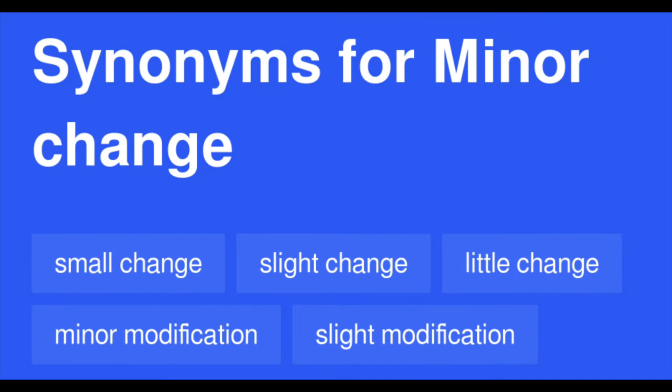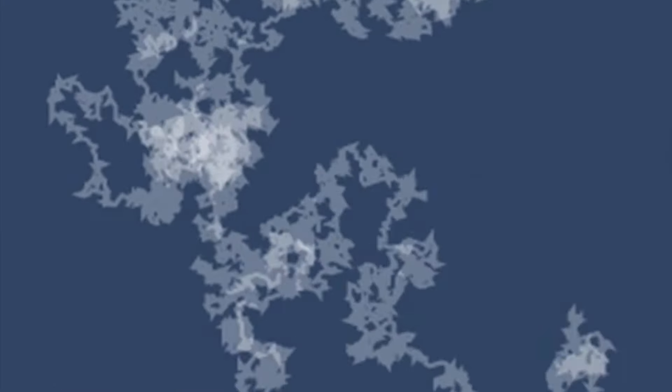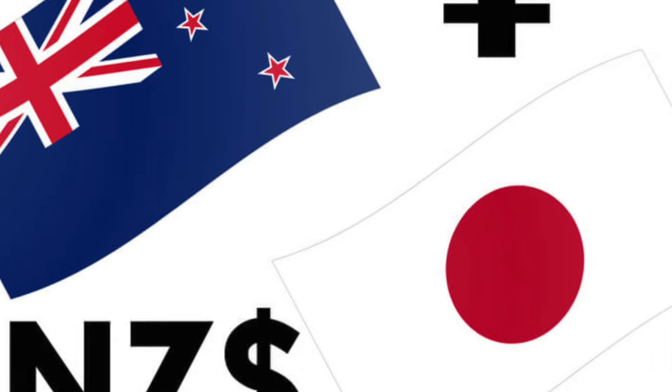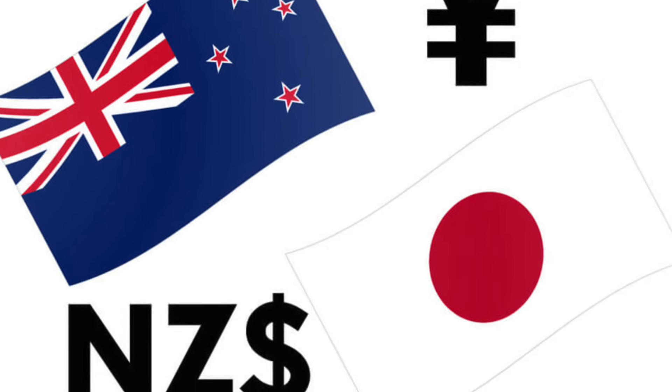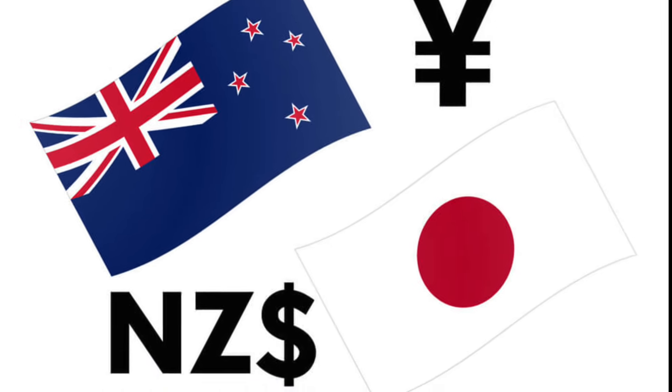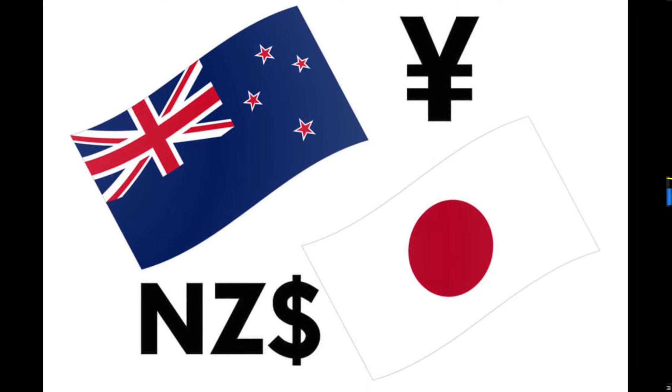As we did in the blog, we opted to make some minor changes in the settings to better illustrate the signals. There were no specific numbers, just totally random settings. So without further delay, let's get into it with the New Zealand dollar against the Japanese Yen.